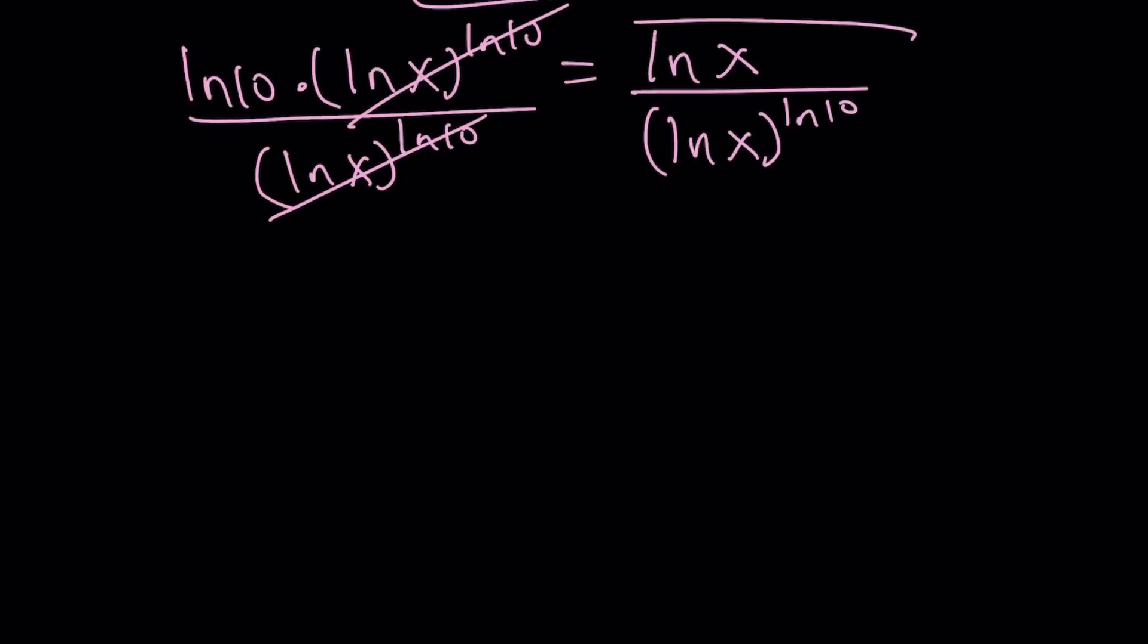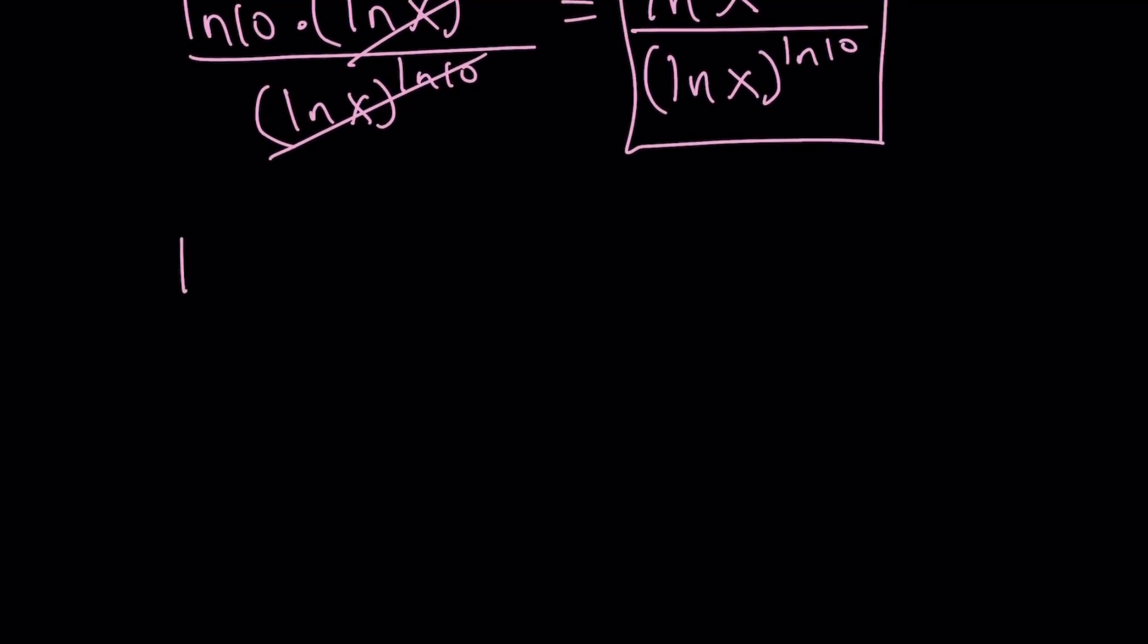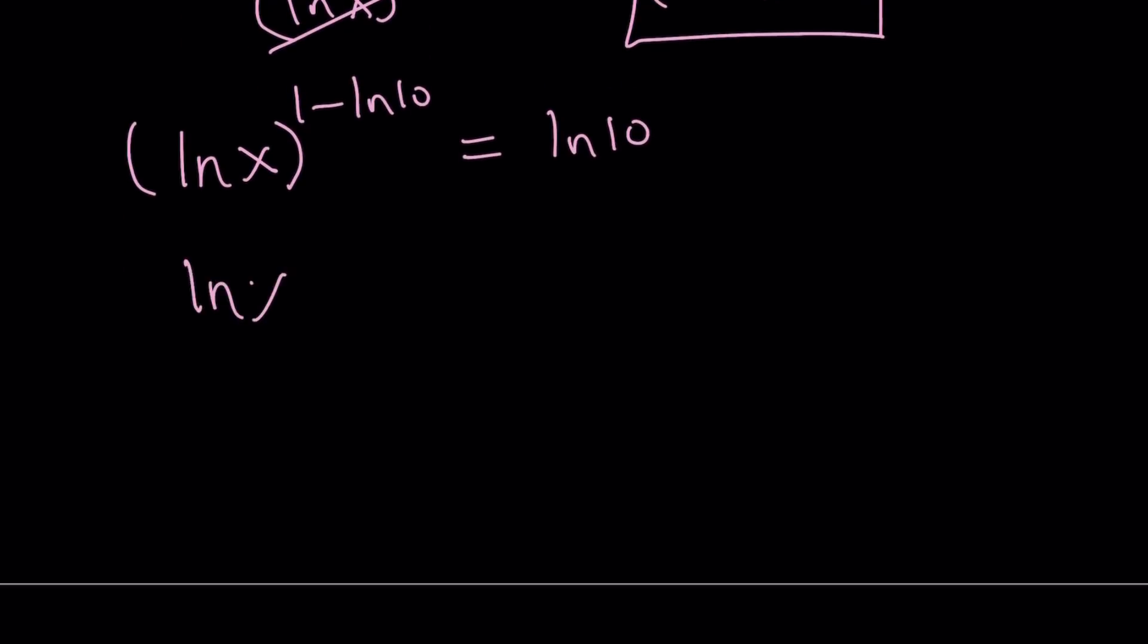Now what happens here? Look at the right-hand side. You know what I'm saying, right? It becomes ln x to the power 1 minus ln 10. And that equals ln 10. Yay, we're almost there. From here, you can isolate ln x. That becomes ln x equals ln 10 to the power 1 over 1 minus ln 10. So what I did here was raise both sides to the power 1 over 1 minus ln 10, which kind of cancels this out because they're reciprocals. Make sense? Hopefully it does.